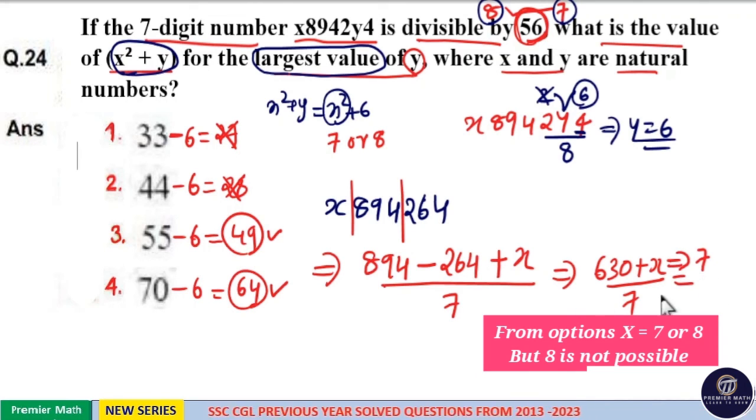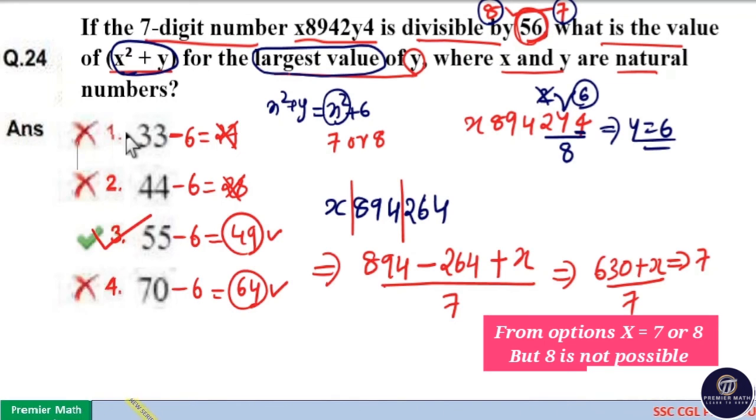x equals 7, so option 3 is your answer. That is, if x is 7, then x squared plus y equals 55.